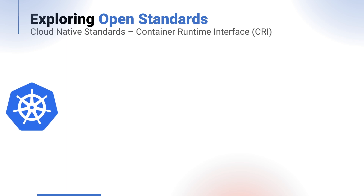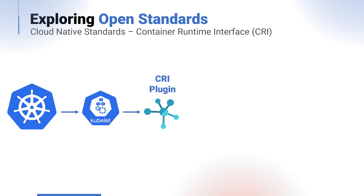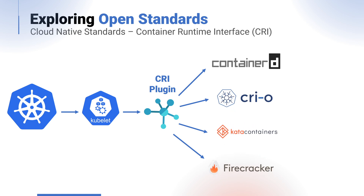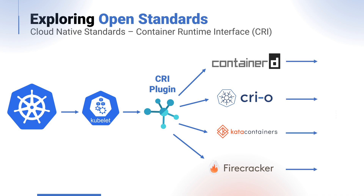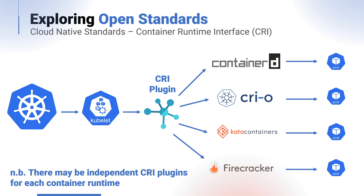Next, we have the Container Runtime Interface, the CRI. The Container Runtime Interface is an open standard commonly used by the Kubelet in Kubernetes — the worker node — to interact with a Container Runtime Engine. The CRI is essentially a plugin interface which enables the Kubelet to use a wide variety of container runtimes, such as ContainerD, CRI-O, Kata Containers, and Firecracker. These can be used by Kubernetes via the Kubelet for pod creation, making this something which can easily be swapped as required. CRI is not exclusive to the Kubelet — other projects can also make use of Container Runtime Interfaces, which is the beauty of an open standard.